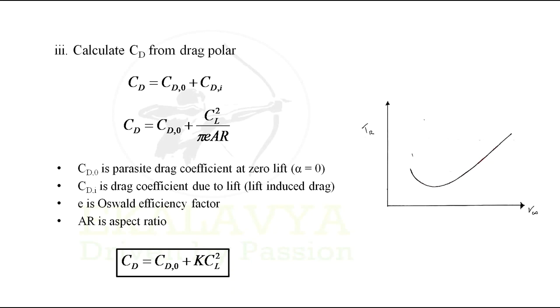Further we can express 1 divided by pi E AR as K. With that, coefficient of drag Cd will be equal to coefficient of zero lift drag plus K Cl square.